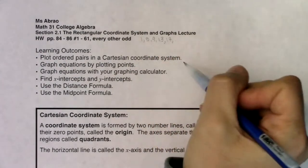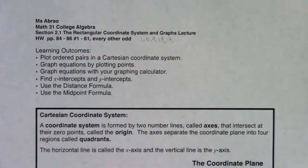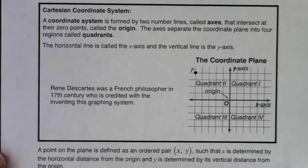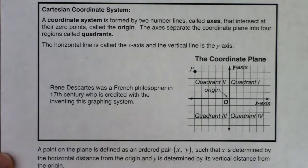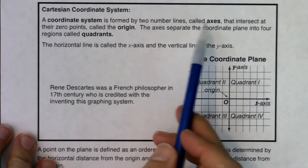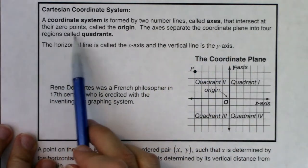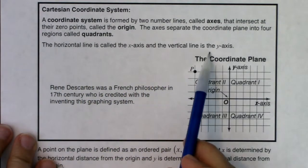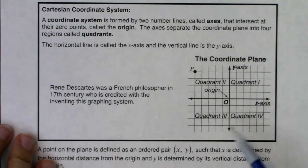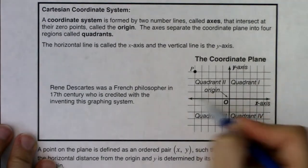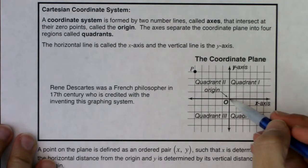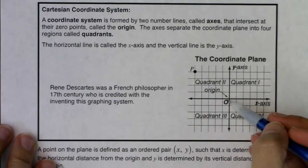And the first learning outcome here was talking about the Cartesian coordinate system and plotting ordered pairs. So I'm going to scooch the paper up and we're going to get a look at the Cartesian coordinate system in a brief history lesson. The Cartesian coordinate system: a coordinate system is formed by two number lines called axes that intersect at their zero points, which we call the origin. The axes separate the coordinate planes into four regions called quadrants. The horizontal line is called the x-axis and the vertical line is called the y-axis.